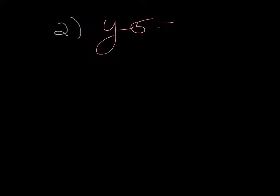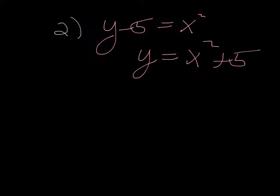Example 2 is a trick: y minus 5 equals x squared. You might instinctively think it's down 5, but you need to rewrite it in standard form. Moving the 5 over gives y equals x squared plus 5, which is actually a shift up 5. So remember to move all numbers over to the x side before identifying shifts.